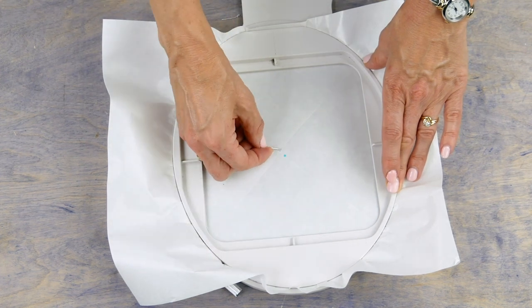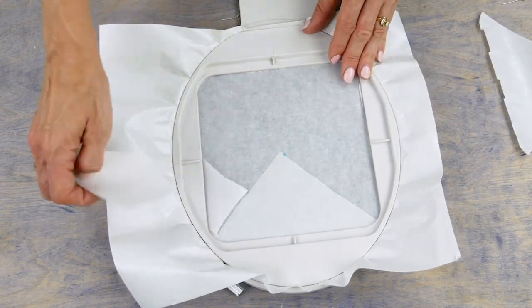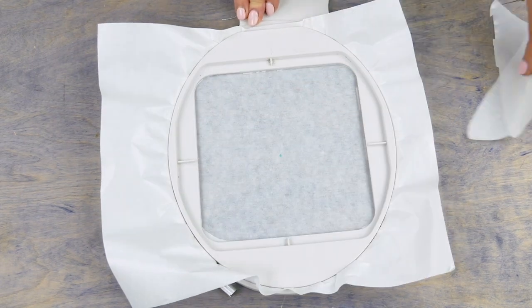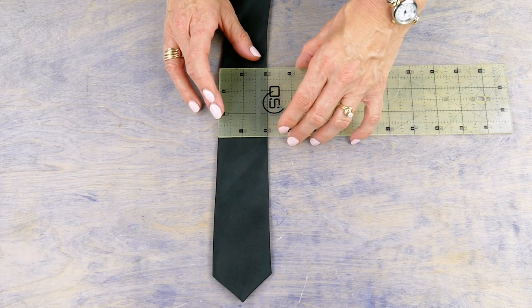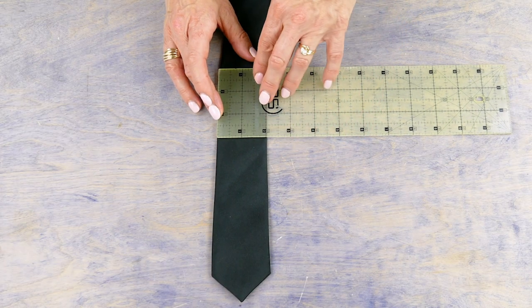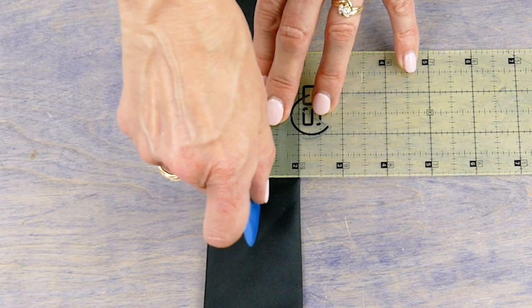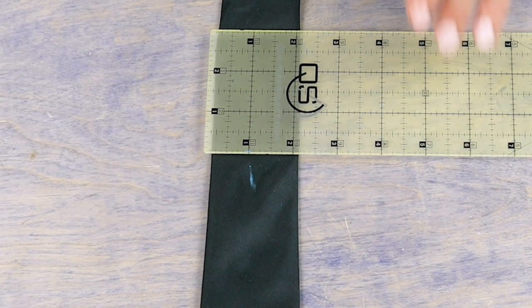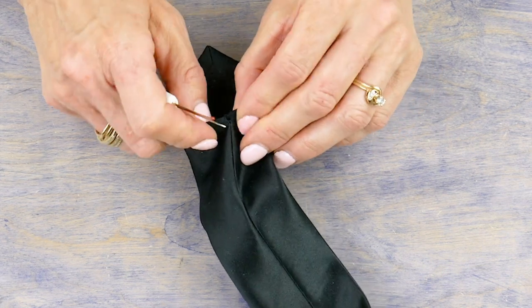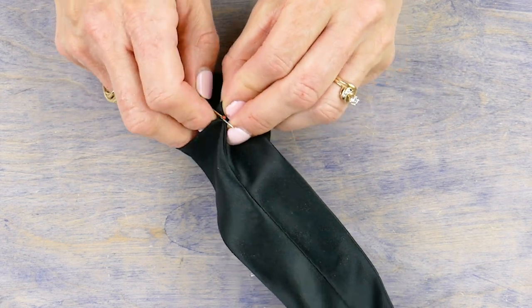Decide where you want the center of your design to sit on the tie and mark the spot with some tailor's chalk. With a stitch ripper, open up the back of the tie for at least six inches so your tie can sit flat and open on the stabilizer.